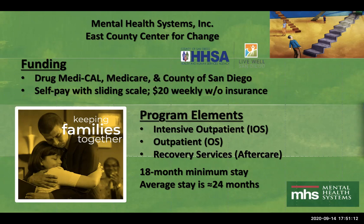Some clients have stayed as long as three to three and a half years. The program is divided into intensive outpatient, outpatient, and recovery services (aftercare), and clients move through a series of phases. The first two phases are intensive outpatient, lasting approximately six months; outpatient lasts another six months; and recovery services is the final six months, adding up to 18 months. Clients may stay longer due to relapse, needing a higher level of care, or being sent to residential treatment and returning.